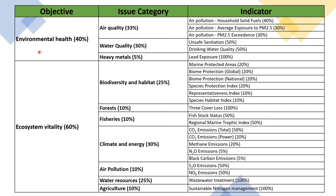Under environmental health, the categories include air quality, water quality, and heavy metals. Specific indicators include air pollution household exposure, particulate matter, unsafe sanitation, drinking water quality, and lead exposure. Under ecosystem vitality, categories include biodiversity and habitat, with indicators such as marine biome protection, species biome protection at global and national levels, species index, representativeness index, species habitat index, forestry, climate and energy, and fisheries.